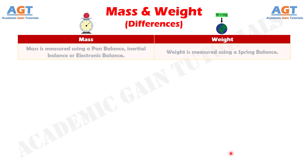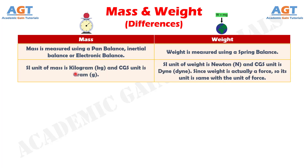Number 6: Mass is measured using a pan balance, inertial balance, or electronic balance, whereas weight is measured using a spring balance.